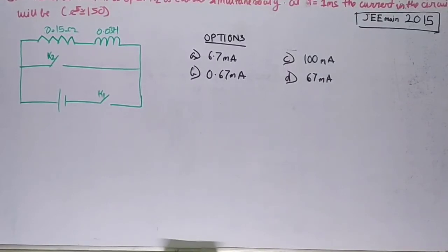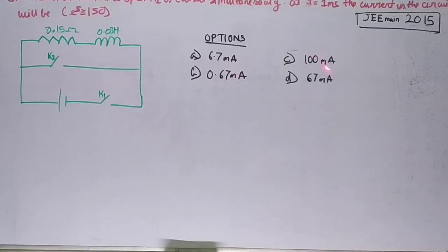So now I have read the options which are 6.7 mA, 0.67 mA, 100 mA, and 67 mA. Now let me ask you something. In the question we have 0.15 kilohm and 0.038 Henry. So if I have less time or I am in a hurry, what would I have chosen the answer to be?